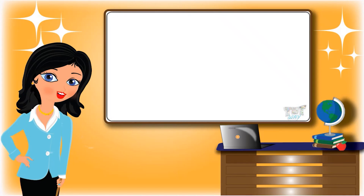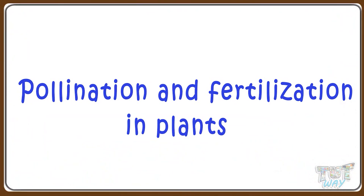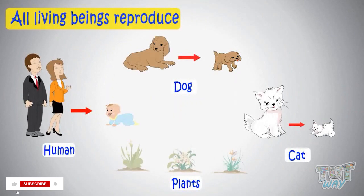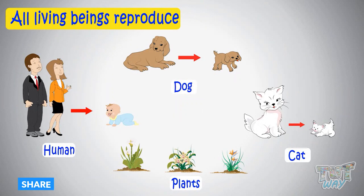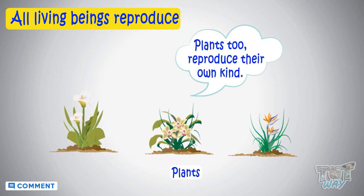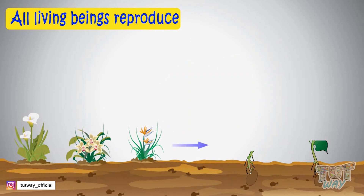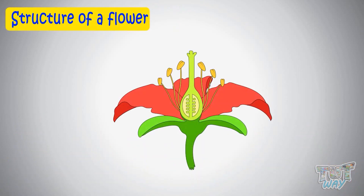Hi kids, today we will learn about pollination and fertilization in plants. We learned that all living beings reproduce — that is, all living things give birth to the same kind. Similarly, plants reproduce their own kind, and most plants reproduce through seeds. They produce seeds which, when they germinate, produce a new plant. Let's see how these seeds are produced.